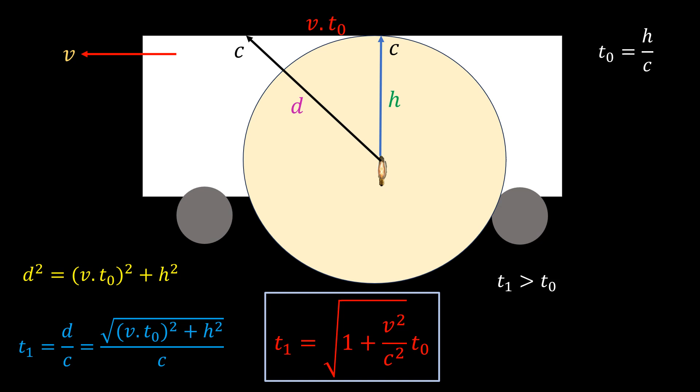In plain English, this means that the time it takes the light to travel the inclined path is always greater than the time it takes it to travel the vertical path. This inclined path is the path as seen by the stationary observer outside the bus. This means he will see the light take a longer time to travel the inclined distance. This contradicts Einstein's assumption that the observer outside will see the light hit the roof at the same time as the observer inside the bus.